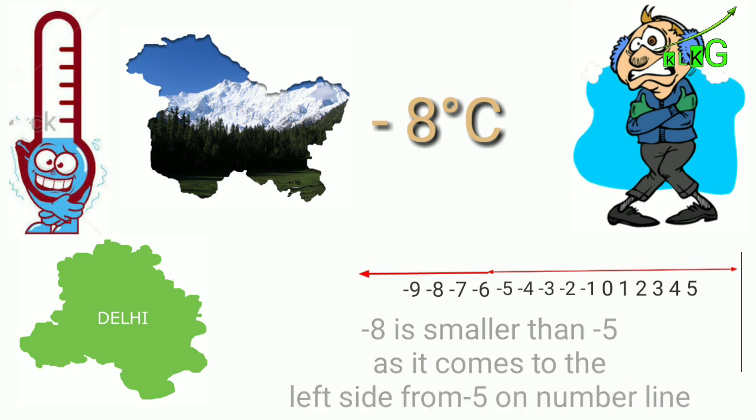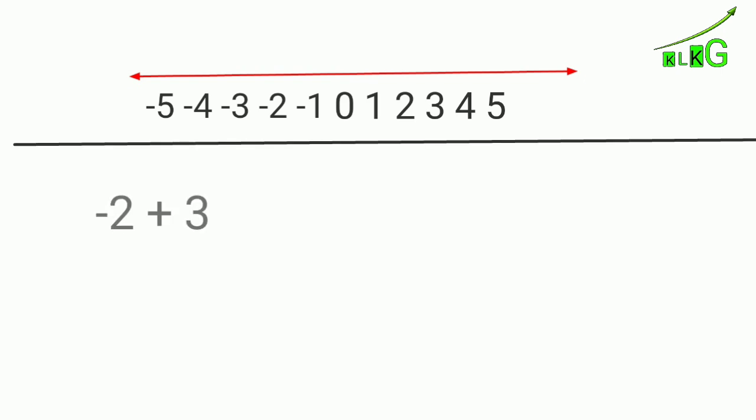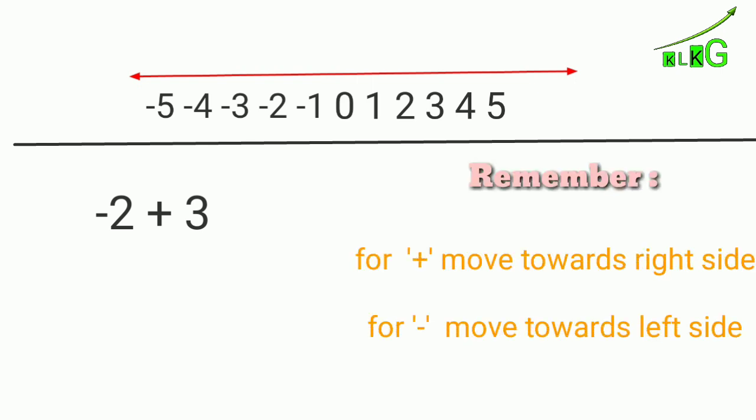So based on the same thing, I will tell you about how addition and subtraction is done on a number line. Now see, for an example, minus 2 plus 3. You have to remember that when the sign is plus we have to move towards the right side, and when there is a sign of minus we have to move towards the left side.